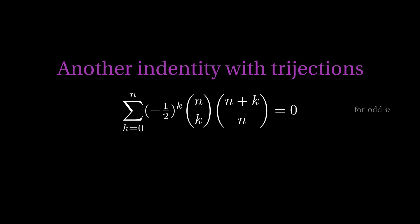Ready for another trijective proof? For odd n, the sum of minus a half to the k times n choose k times n plus k choose n is zero. What is this ugly nonsense? Alternating? Fractions? Don't worry, the zero on the right side is pretty pleasant, so it looks like everything will work out in the end.